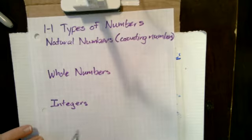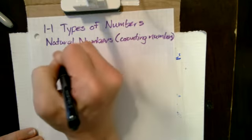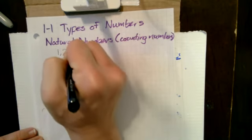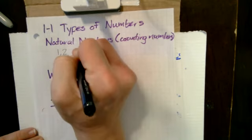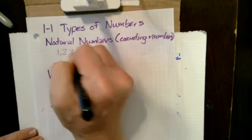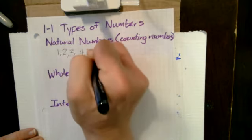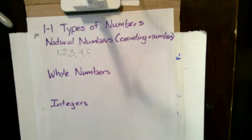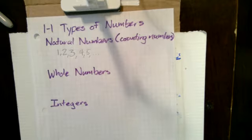The natural numbers, also known as the counting numbers, are the set of numbers that starts with one and just goes up by one every time. So we've got one, two, three, four, five, and so on. Any positive whole number is a natural number. So we take everything from one to positive infinity — if it's a whole number, that is one of our natural numbers.